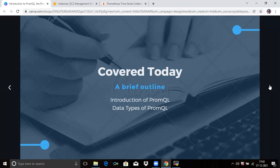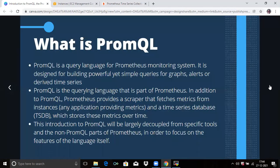What is PromQL? PromQL is a query language for Prometheus monitoring system and it is designed for building powerful and simple queries for graphs, alerts, or derived time series.